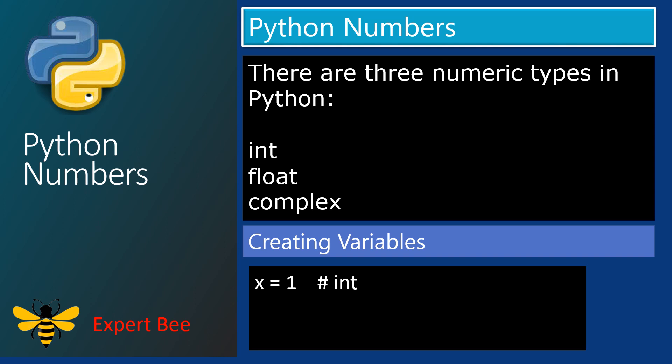Now we will make another variable y. y is equal to 2.8. Here, y is declared the moment you have assigned 2.8 to y. 2.8 is a float value because it contains a decimal. z is equal to 1j. Here, z is declared the moment you have assigned 1j to z. 1j is a complex number because it contains j, therefore the data type of z is complex.